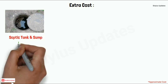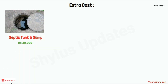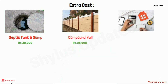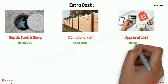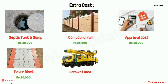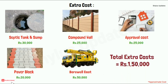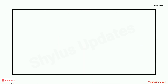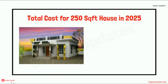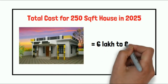Extra costs: Septic tank and sump rupees 30,000 — Compound wall rupees 25,000 — Approval cost rupees 25,000 — Paver block rupees 20,000 — Borewell cost rupees 50,000. Total extra cost is rupees 1,50,000. Therefore, the total cost for a 250 square feet house in 2025 would be from 6 lakh to 8 lakh.